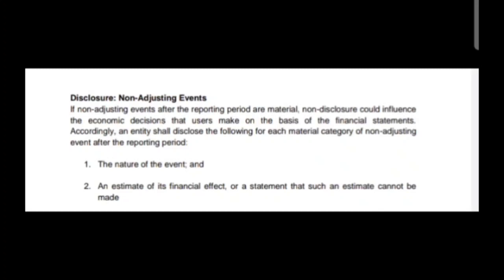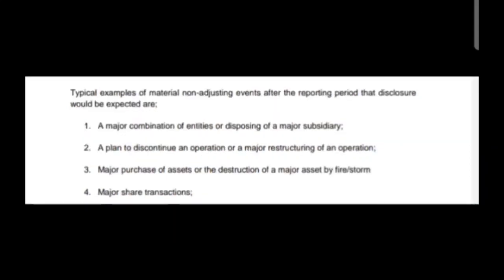Disclosures of non-adjusting events: If non-adjusting events after the reporting period are material, non-disclosure could influence the economic decisions that users make on the basis of the financial statements. Accordingly, an entity shall disclose for each material category of non-adjusting event: the nature of the event and an estimate of its financial effect, or a statement that such an estimate cannot be made. Examples of material non-adjusting events requiring disclosure include a major combination of entities or disposing of a major subsidiary.